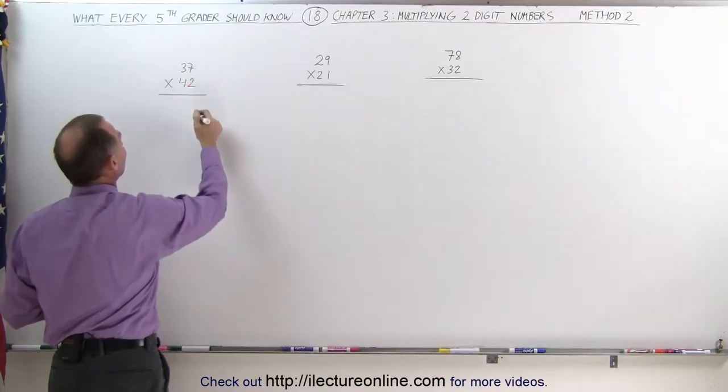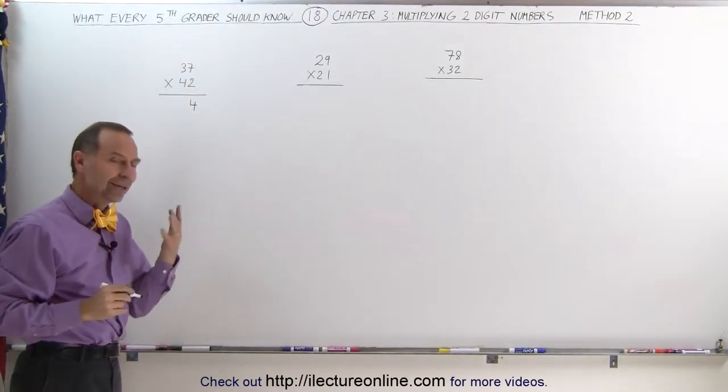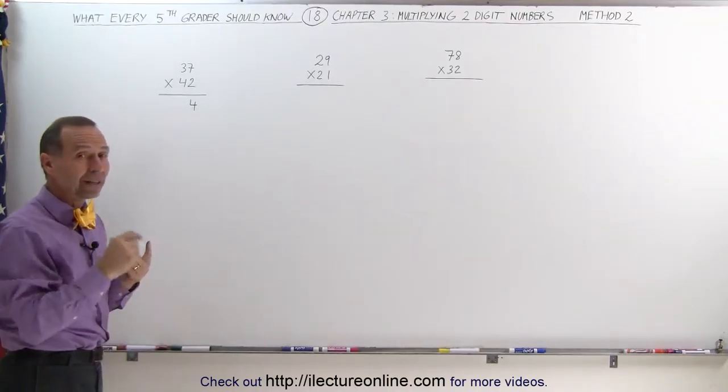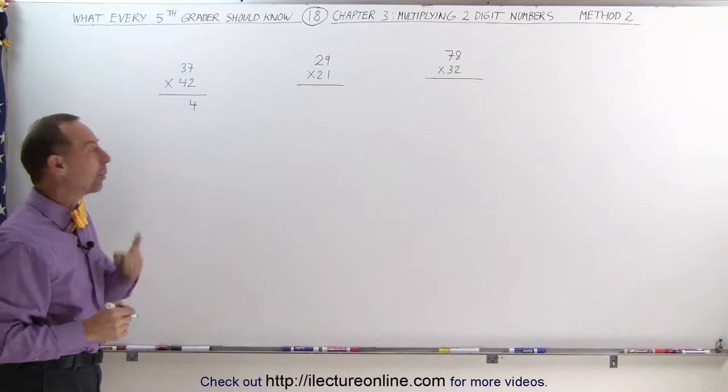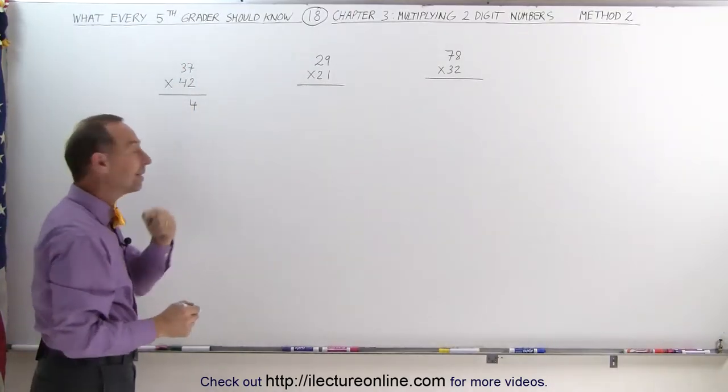2 times 7 is 14, we write the 4 and remember 1, and you know what I always do? I use my fingers to remember those numbers, so I go 2 times 7 is 14, I write down the 4 and I remember 1. 2 times 3 is 6, I remember the 1, add that, that gives me 7.